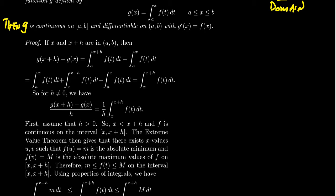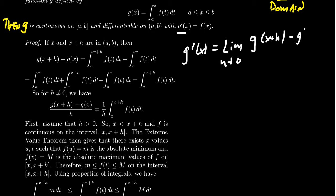The proof is going to follow the basic idea that if we want to calculate the derivative of g, we have to go to the definition of the derivative. The definition of the derivative is going to be the limit as h approaches 0 of g of x plus h minus g of x, over h. So we have to work with this limit of difference quotients, and what we're going to first do is consider the difference quotient of this expression — let's start with the numerator.